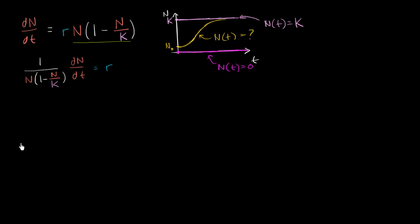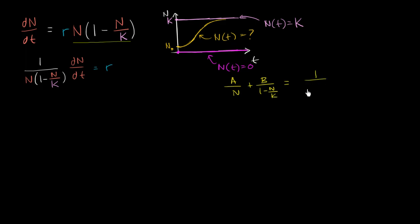Now I want to take the antiderivative of both sides with respect to t. The right-hand side is straightforward — that's just rt plus some constant. But the left side is a messy expression. Maybe if we could break this out — if we can expand this into two fractions using partial fraction expansion — we can come up with an expression that's a little bit easier to find the antiderivative of. I'm hoping I can find an A and a B where A over n plus B over (1 minus n over k) equals 1 over [n times (1 minus n over k)]. If this looks unfamiliar, I encourage you to review partial fraction expansion on Khan Academy.